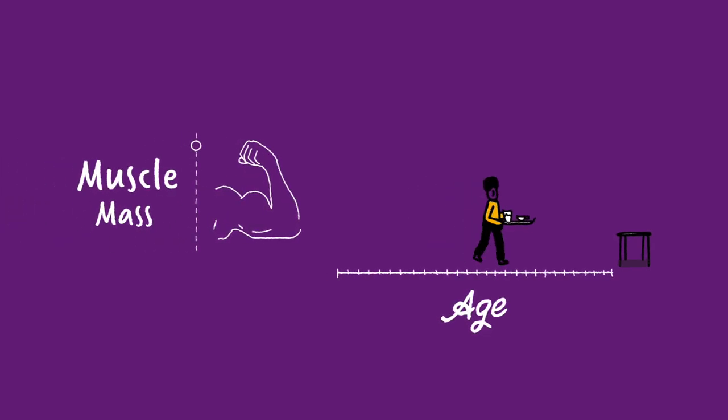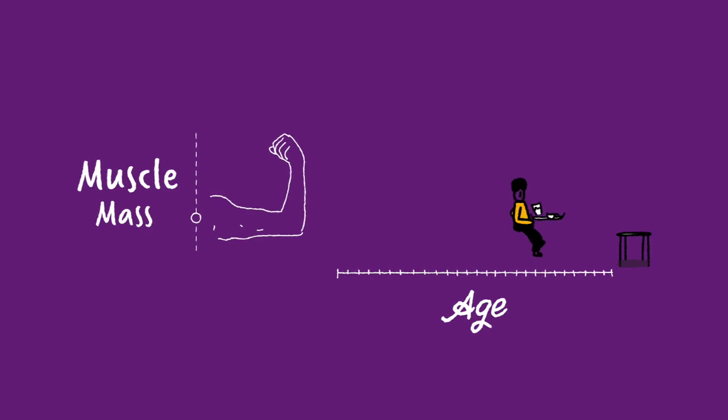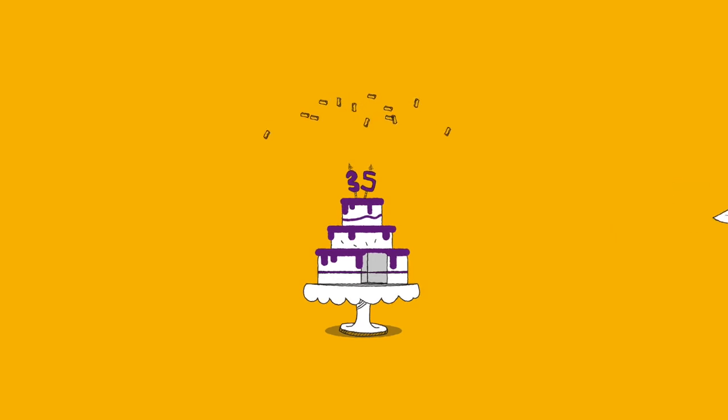It's no coincidence that our risk of falls and fractures goes up as our muscle mass goes down. From age 30, we lose 3-5% of muscle every year unless we take steps to maintain it.